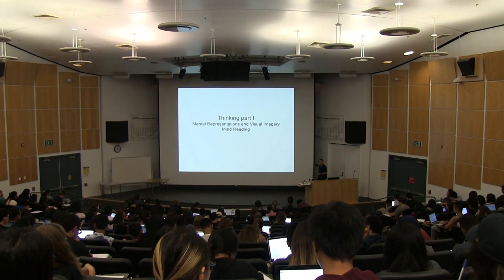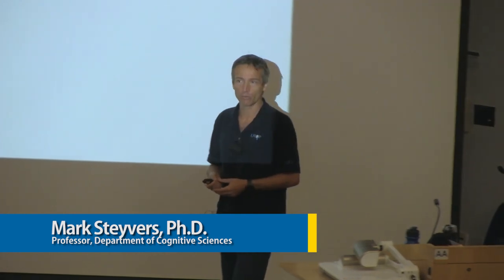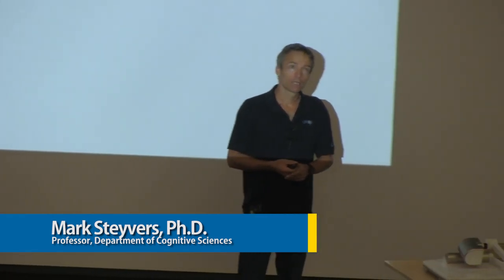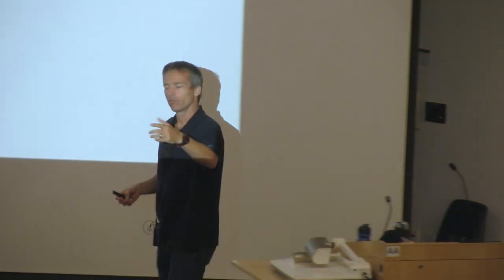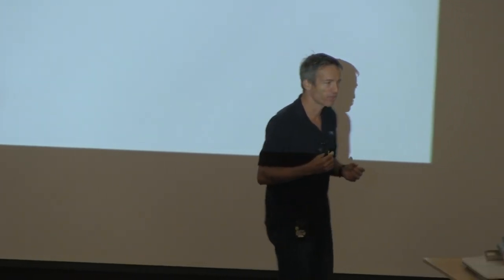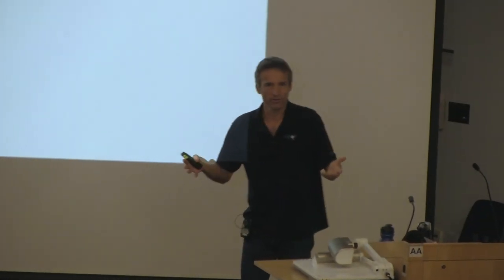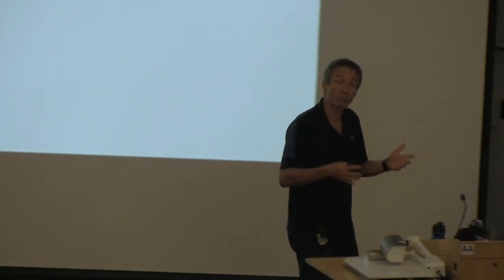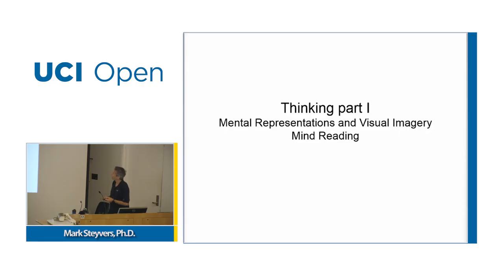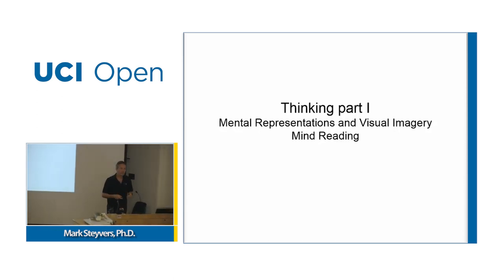Today we'll talk about mental representations and visual imagery, and a science fiction-like topic: mind reading. There's a long debate in psychology about the nature of mental representations. If you are thinking of something, how is that information represented in your mind? If I ask you to think about a cat, how can I verify that a cat is in your mind? How do I know how the cat is represented? Is this something we can even study scientifically? Your private thoughts are exactly that — they're private. But now with some clever experiments and neuroscience techniques, we have ways to open up the mind and understand what it is that you're thinking of.